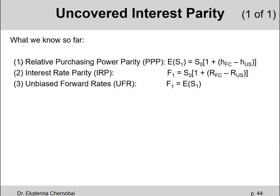Okay, what do we know so far? We have the relative purchasing power parity formula: the expected spot exchange rate in one year equals today's spot exchange rate multiplied by one plus the difference between the foreign country and the US inflation rates. Two, interest rate parity: the one year forward rate equals today's spot exchange rate multiplied by one plus the difference between the foreign country's and the domestic risk-free rates.